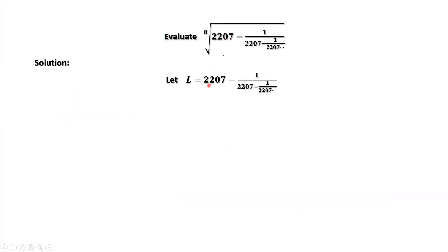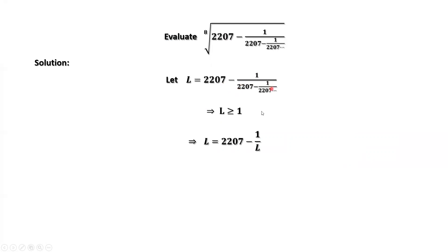Let's define the inside part of the square root as L. You can see L is bigger than or equal to 1. We can rewrite this part by definition as L. Therefore, L equals 2207 minus 1 over L.